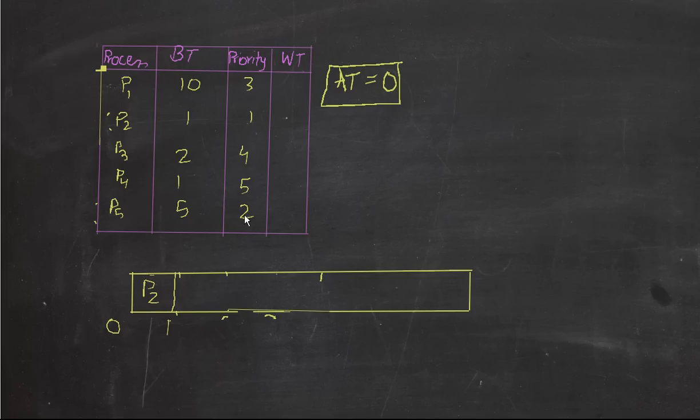Then we execute the second priority process which is p5, so p5 we execute it, so one plus five is six. Then the third one is p1, so let's execute p1, it's a really big process. So six plus ten is sixteen.